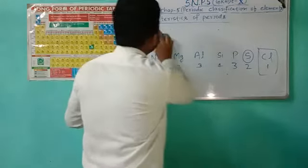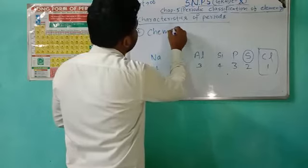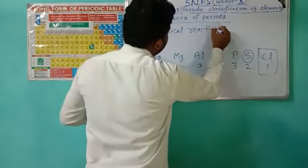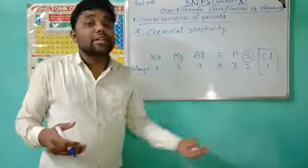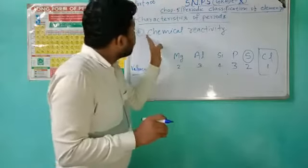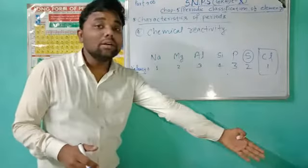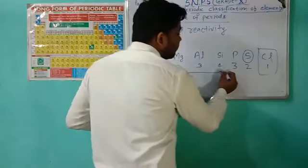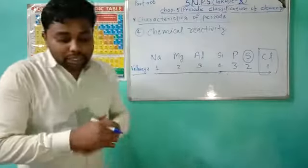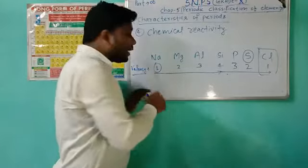The next characteristic is chemical reactivity. If you understand metallic character, you can simply understand chemical reactivity. When we go left to right in the periods, the valency first increases and then decreases, so we can say that reactivity first decreases.